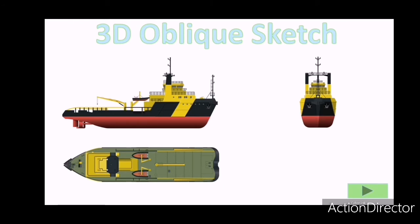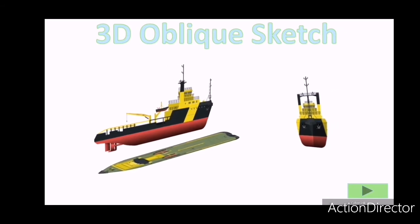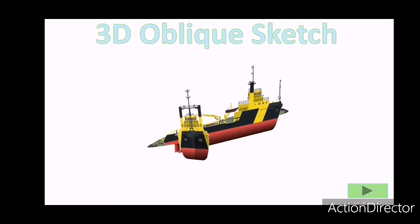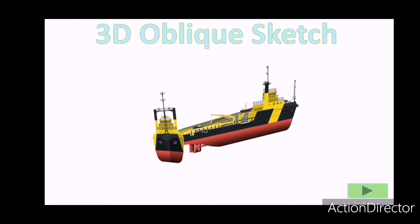First thing, a working sketch is a front, side, and a top view, like you see of this boat. A 3D sketch is when you take your working sketch and put them together like that. So you've got your front, side, top, and boom. Now you have a 3D sketch.